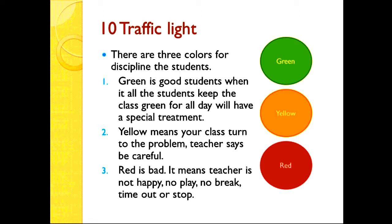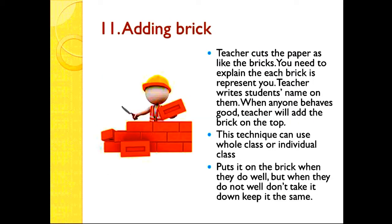Number ten: traffic light. This uses green, yellow, and red. Red means a problem; yellow is in the middle — not normal but minimal; green is super. Green means the student is good — if the whole class stays green all day, they will have a special treatment. Yellow means the class is turning into a problem, so the teacher alerts and reminds them. Red means the teacher is not happy — no play, no break time, time out, or stop.